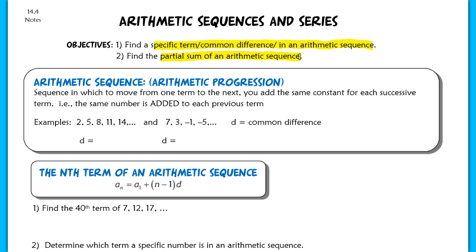Let's discuss first what an arithmetic sequence is. You might also see it referred to as an arithmetic progression, but basically all that this sequence does — it's special because in order to move from one term to the next, you have to add the same constant to each successive term. In other words, you're going to add the same number to each previous term. We call that number the common difference.